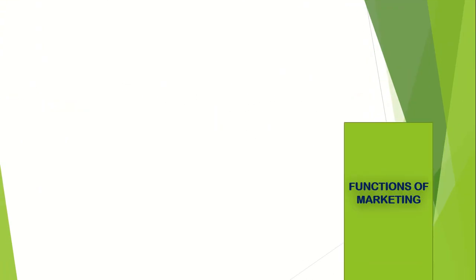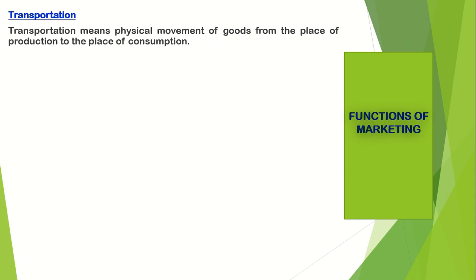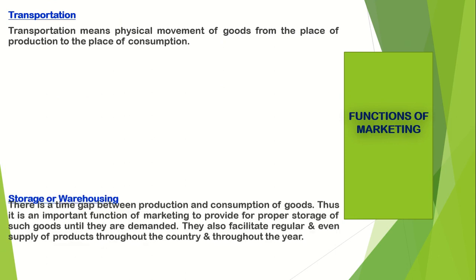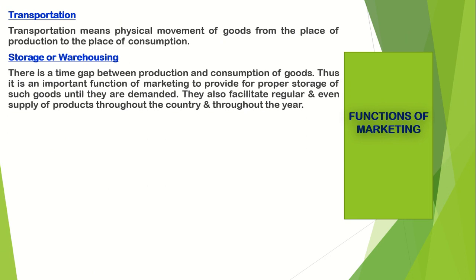The next point is transportation. Transportation means the physical movement of goods from the place of production to the place of consumption. For example, Maruti cars are manufactured in a state in North India but are made available all over the country. Not only finished goods but also raw materials need to be transported. Transportation gives place utility to the products.